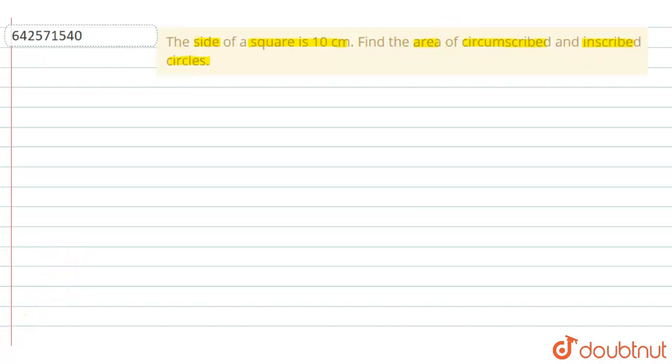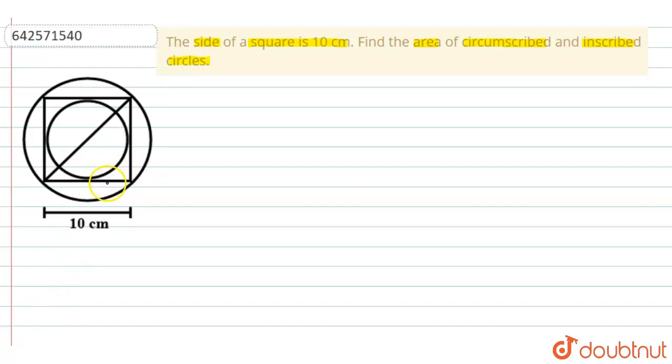We need to draw a diagram for this. So, this is our diagram where we have a square of side 10 cm. Inside the square we have inscribed circles and outside the square we have circumscribed circle.